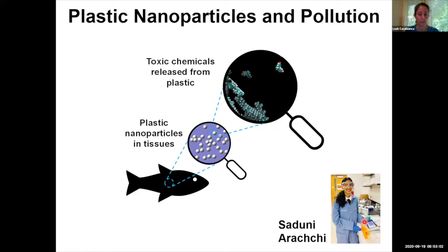When plastic is in the water and ocean over time, it gets broken down into micro and nano scale particles. These particles can be eaten by fish and move up the food chain to larger fish and even fish intended for human consumption. These plastic particles can also concentrate small molecule pollutants from the ocean — carcinogens like polycyclic aromatic hydrocarbons, and endocrine disruptors like bisphenol A.